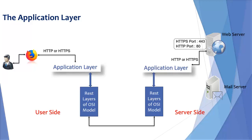While at the server side, application layer decides at which port data has to be sent. For HTTP, port 80 is used, and for HTTPS, port 443 is used mostly.